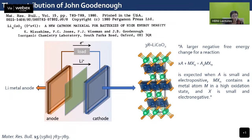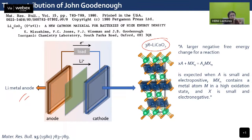John Goodenough's contribution came in 1980 in Materials Research Bulletin. He found that instead of using lithium titanium sulfide, if you use lithium cobalt oxide (LiCoO₂) — still with a lithium metal anode — this would be a much better cathode material. The reasoning was simple chemistry: for a larger negative free energy change, you need A (lithium) to be very small, M (cobalt) to be a metal atom in a high oxidation state, and X to be electronegative (oxygen instead of sulfur). This was a masterstroke — even today in commercial lithium-ion batteries, the cathode material used is lithium cobalt oxide.